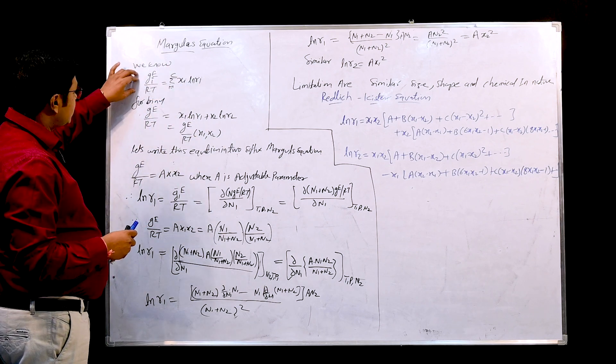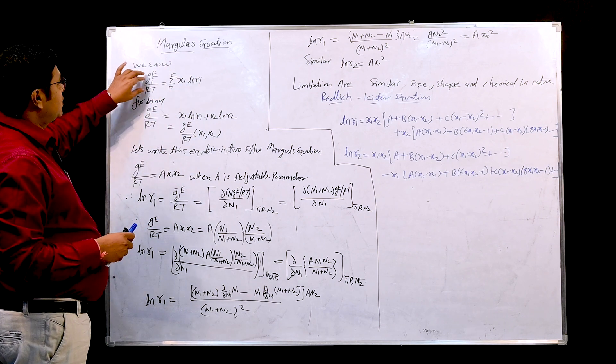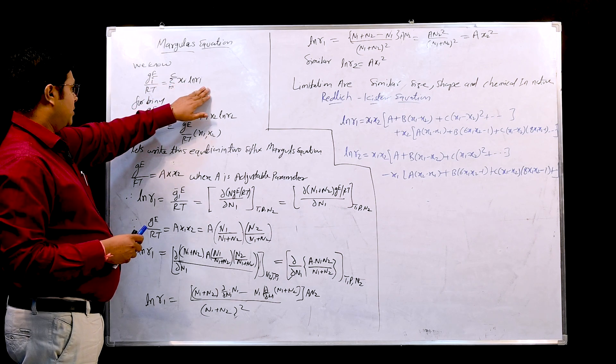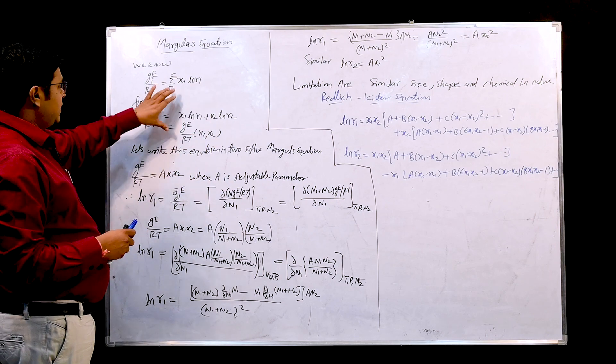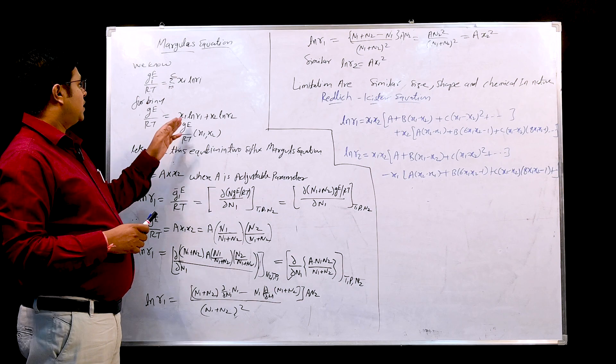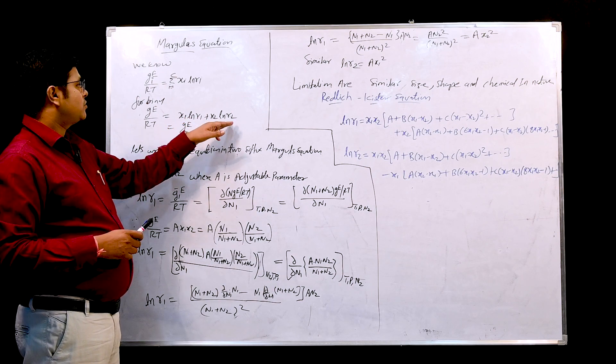He has started the excess Gibbs free energy for component i, g_e/RT = sigma of i equals 1 to c, xi ln gamma i. If you write this expression for the binary term, we can write x1 ln gamma 1 plus x2 ln gamma 2.